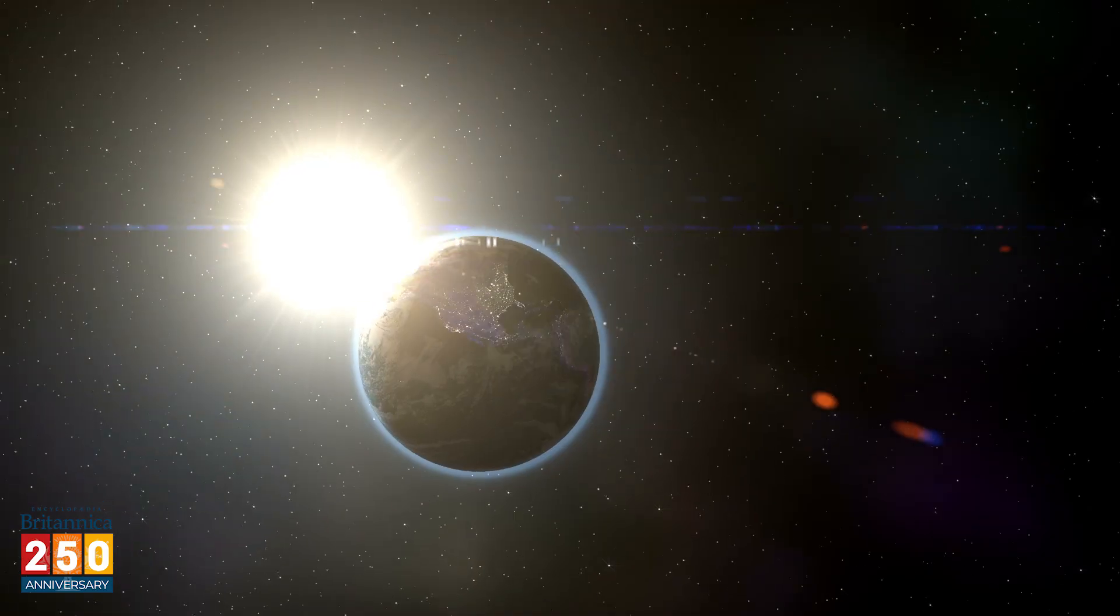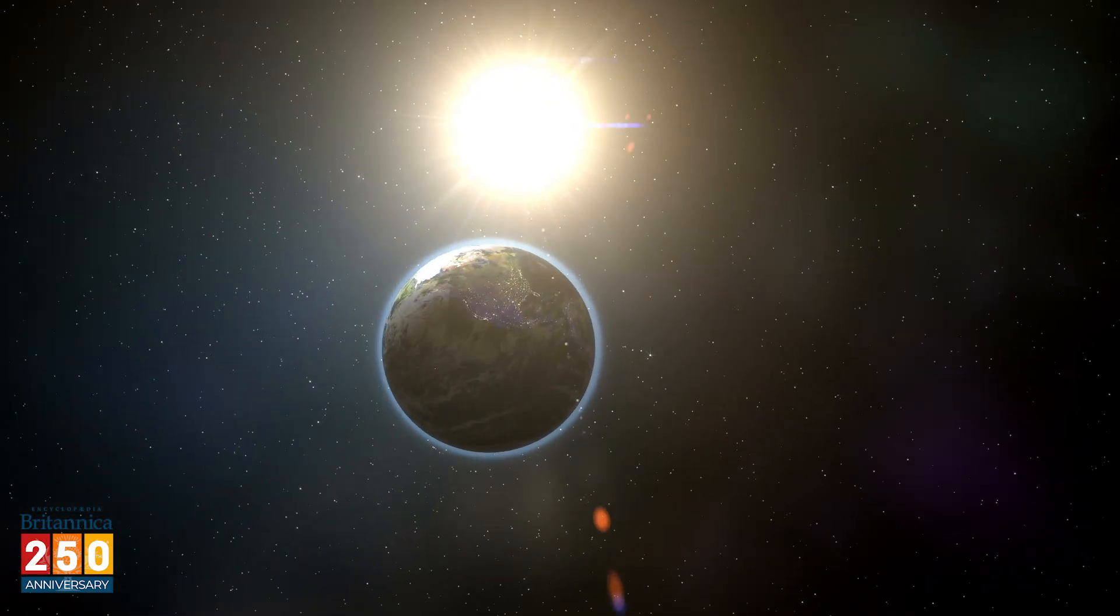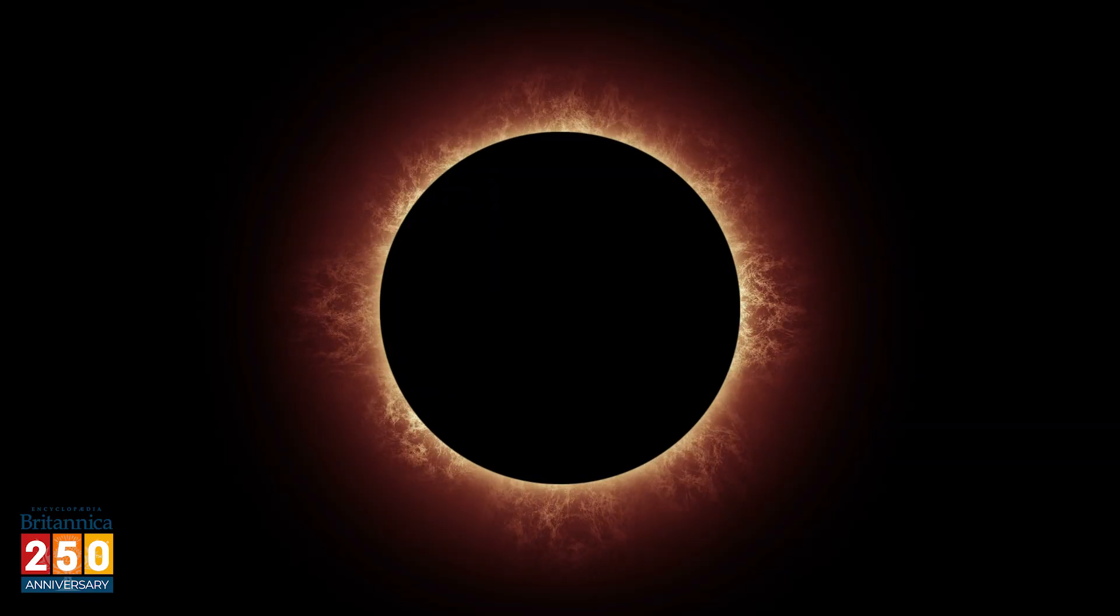A lunar eclipse is what happens when the Earth passes between the Sun and the Moon. And a solar eclipse is what happens when a celestial dragon devours the Sun.